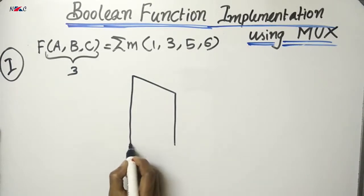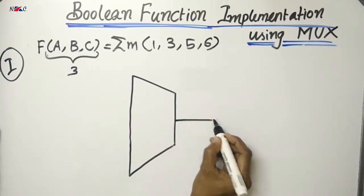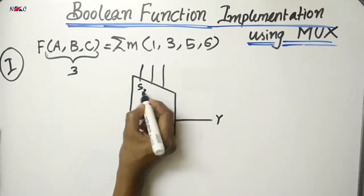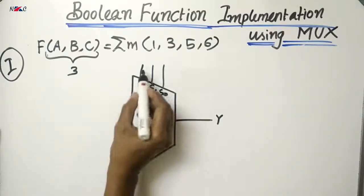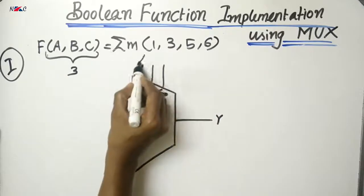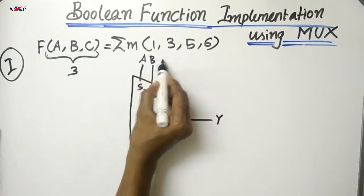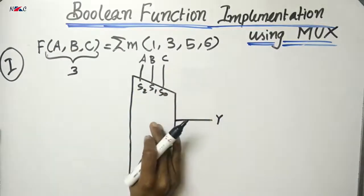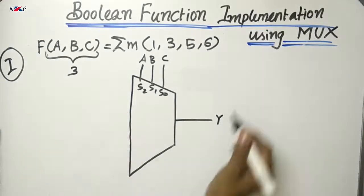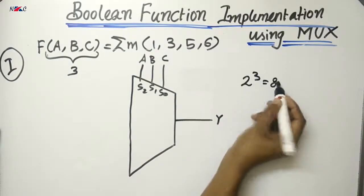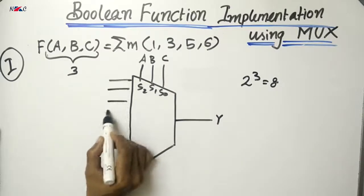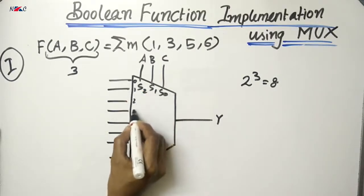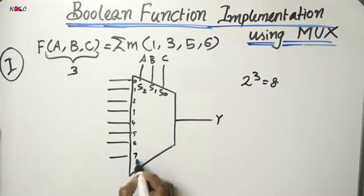A multiplexer always has a single output. For the 8-by-1 MUX with three select lines S2, S1, S0, we represent the select variables in terms of A, B, and C, and apply the inputs accordingly. With three select lines, the multiplexer has 2 raised to 3 — that is, eight input lines — corresponding to inputs 0, 1, 2, 3, 4, 5, 6, and 7.